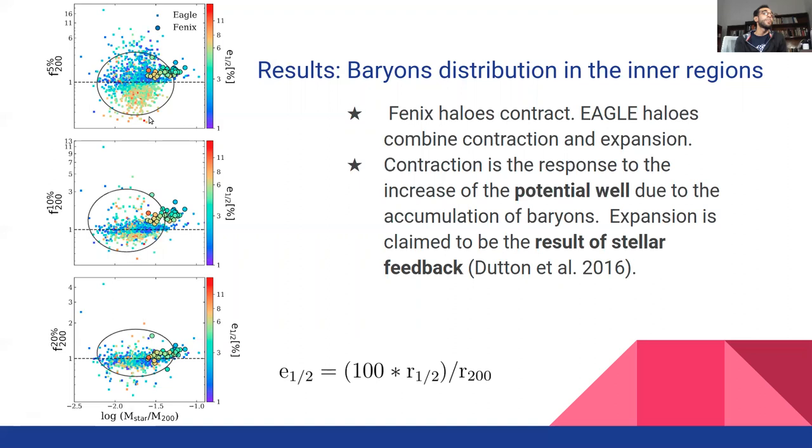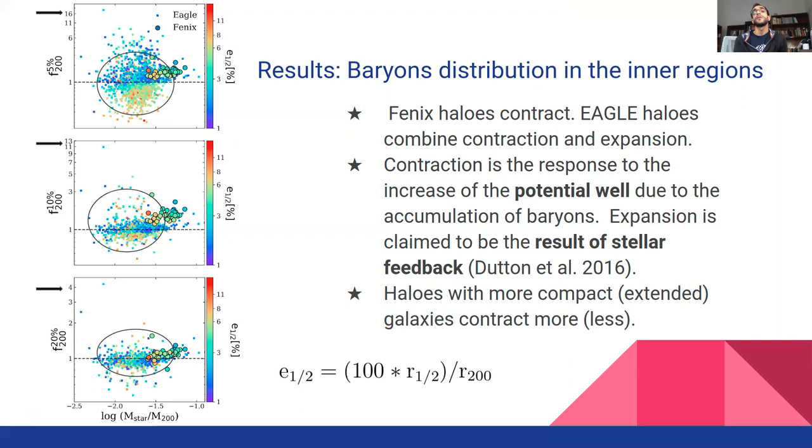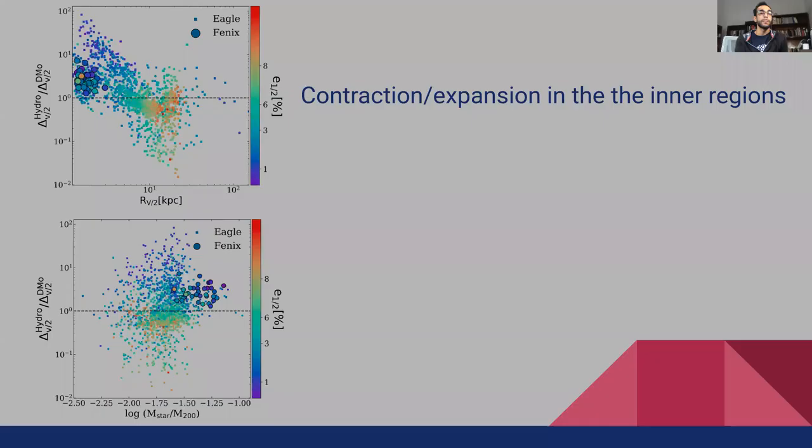The expansion of Eagle halos in the central regions has been thoroughly analyzed by Schaller et al. 2015 and is the result of a more effective stellar feedback and a greater loss of baryons, while the contraction is claimed to be the result of an increase of potential well.